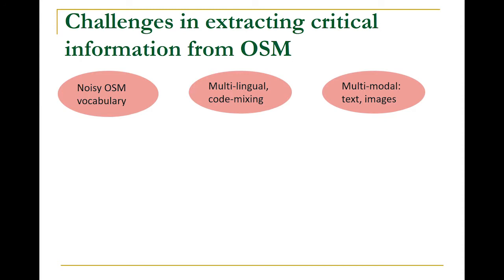In datasets containing hundreds of thousands of tweets, we found only a few hundreds of such posts, so extracting this information is itself a challenge. This is mainly because social media vocabulary is very noisy — no one follows grammatical rules. Also, when something happens in places like India, things are multilingual: people use Hindi, English, and code-mixing, where the same post contains both languages. And there is multimodal input — people are posting images and text.